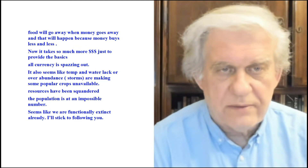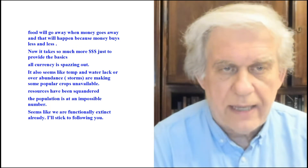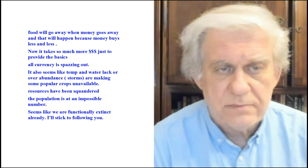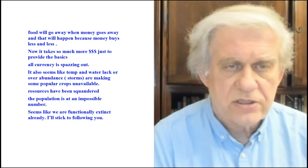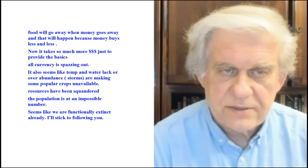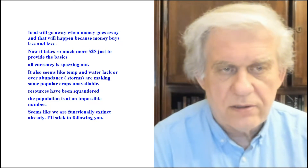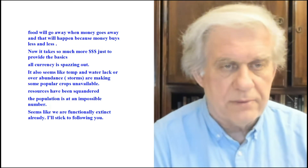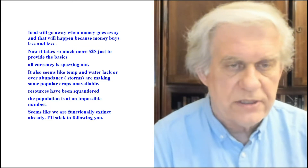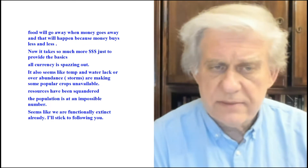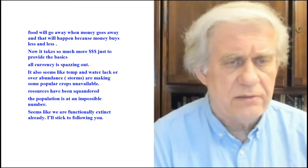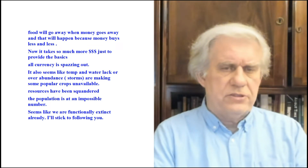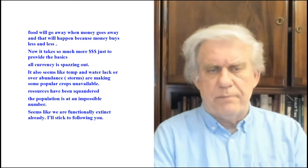Food will go away when money goes away, and that will happen because money buys less and less. It takes so much just to provide the basics. All currency is spazzing out. Lack or overabundance of storms are making some popular crops unavailable. Resources have been squandered. The population is at an impossible number. Seems like we are functionally extinct already. That's a good summary of what I propose as well — we are functionally extinct.